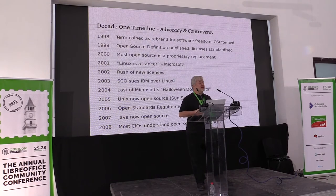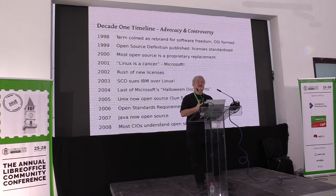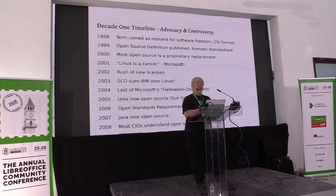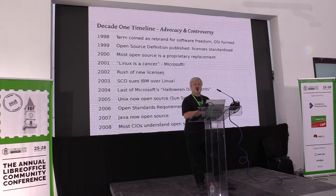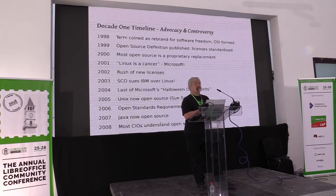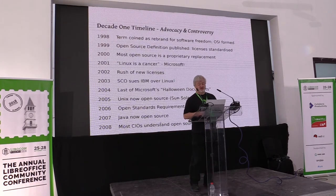By the mid part of that decade, there was a rush on open source licenses. There was also a rush to make money from open source. And in 2004 it became apparent that Microsoft had gone beyond calling the GPL a cancer — it was actually an organized campaign. By 2005, Unix had started to become open source after nearly 40 years of being proprietary software, when Sun made scenarios of open source software.